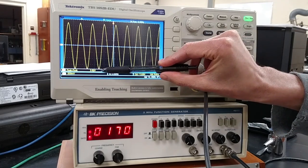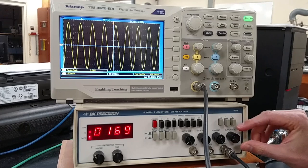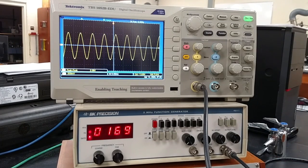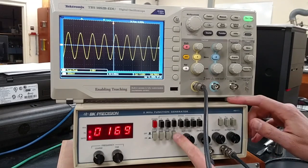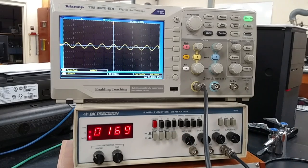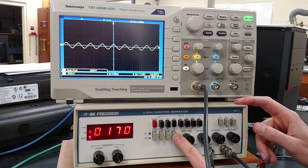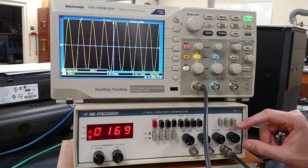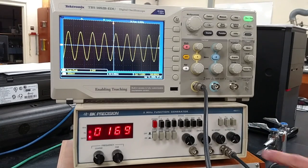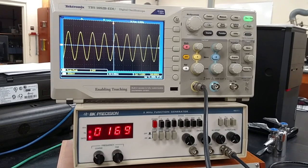There is another control which is the output level. This one changes the amplitude of the signal. We have 3.6 volts peak-to-peak. The smallest value is around two volts. There are ways to make it even smaller using this attenuation of 20 decibels, so we have a wide range of possible amplitudes.